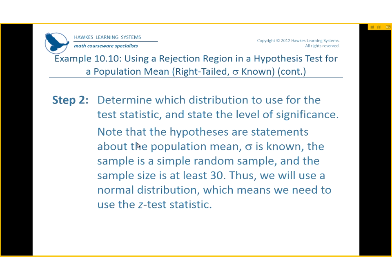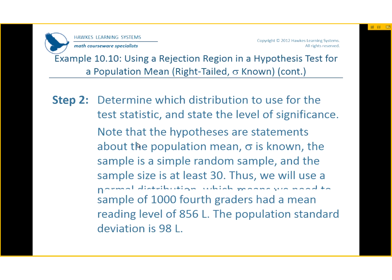Determine which distribution to use for the test statistic and state your level of significance. Note that the hypotheses are statements about the population mean. The standard deviation of the population is also known, and the sample is a simple random sample. We do know that the sample size is at least 30. So we can use a normal distribution, which means we need to use the Z test statistic.